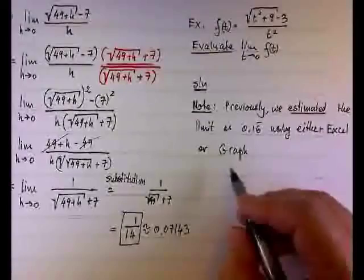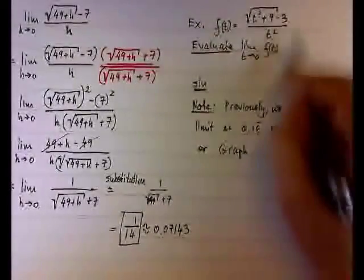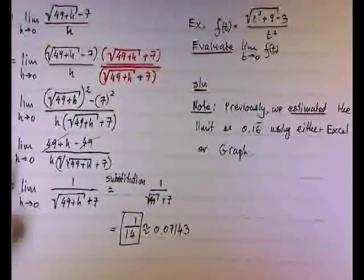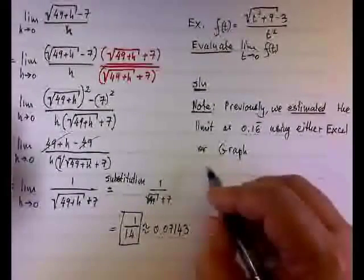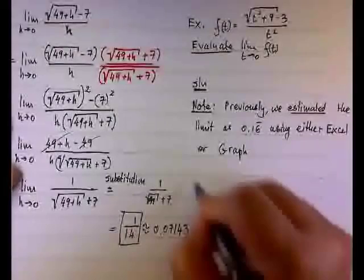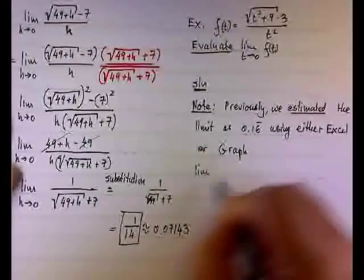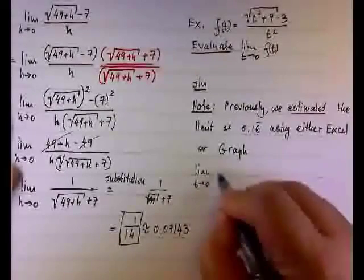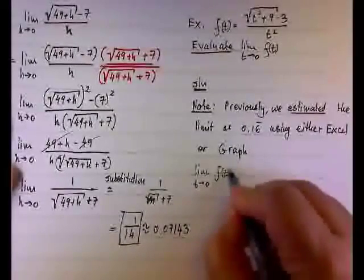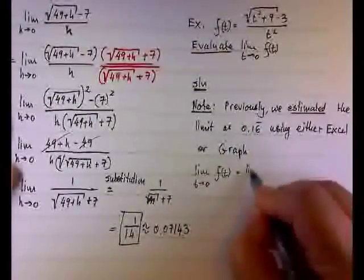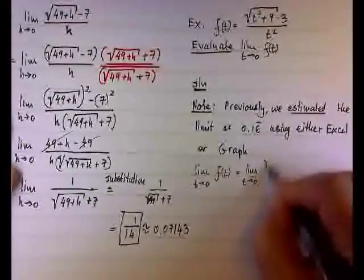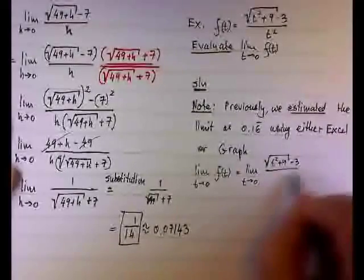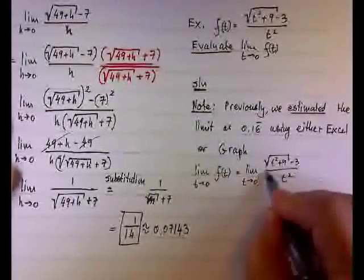So now we need to evaluate. To evaluate, we're going to say the following. We're going to massage first the function. First of all, let's write it in limit notation. The limit notation will be the limit when t goes to 0 of f of t, which will be the limit when t goes to 0 of the square root of t squared plus 9 minus 3 over t squared.